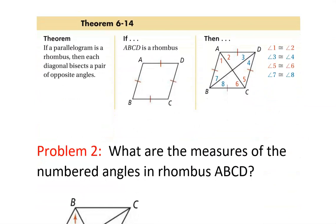Theorem 6.14: if a parallelogram is a rhombus, then each diagonal bisects a pair of opposite angles. Bisects means cut in half. This diagonal makes this angle and this angle the same — it just cuts it in half all the way around. So angles 3 and 4 are the same, angles 5 and 5 are the same. The diagonals bisect the angles, which helps you figure out what all the angles are.